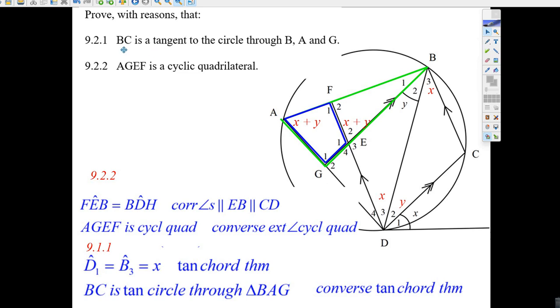Now they want us to prove that BC is tangent to the circle that passes through B, A, and G. Well, that would work if BC was a tangent, is if the angle x plus y here would equal the angle at the top here. Well, we know that A is x plus y. Why do we know B₃ is x? Well, D₁ equals B₃. D₁ equals B₃ equals x. It's another case of the tangent-chord theorem.